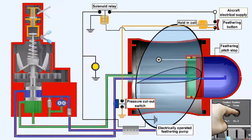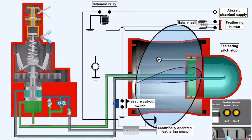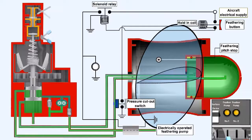Oil pressure will now build up within the system, eventually operating a pressure-operated cutout switch, which will interrupt the supply to the feathering button hold-in coil. This causes the feathering button to release, which terminates the supply to the feathering pump solenoid relay, which in turn breaks the supply to the feathering pump.